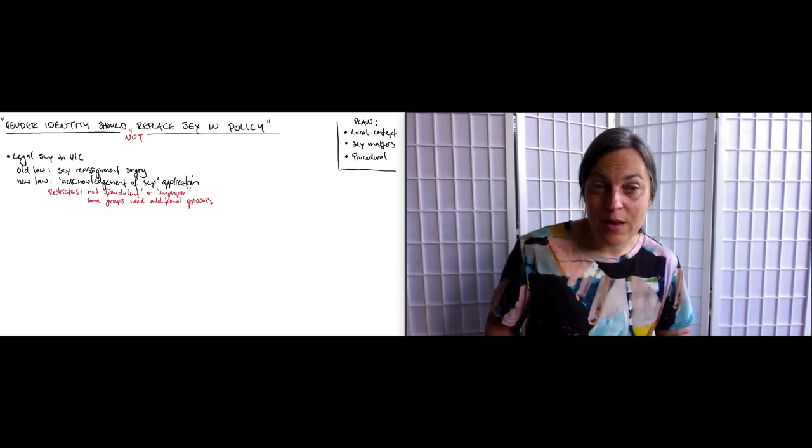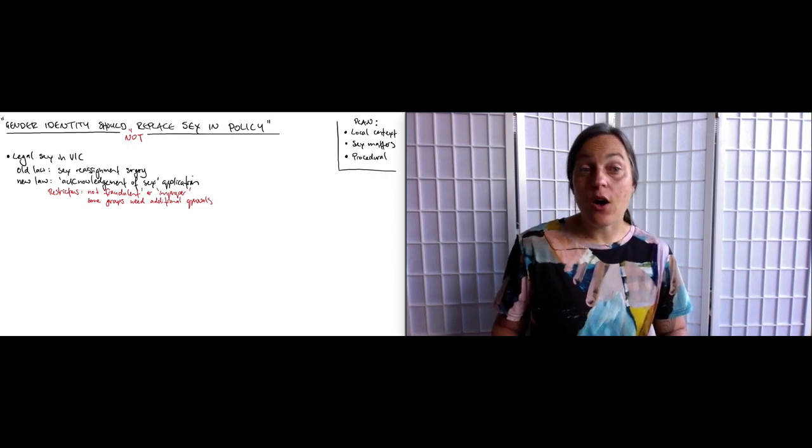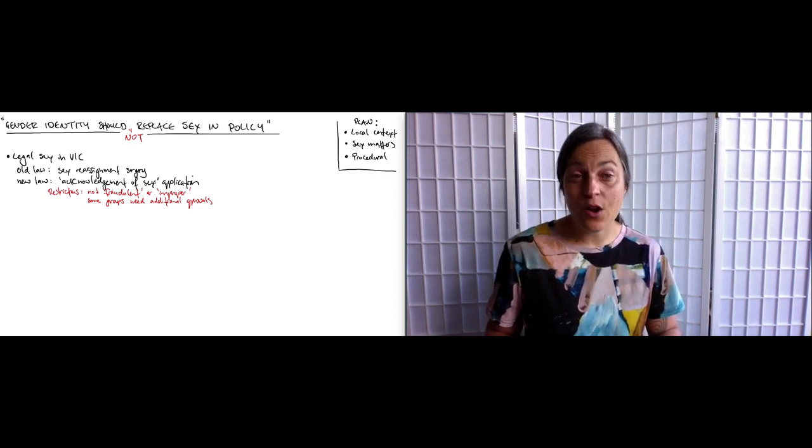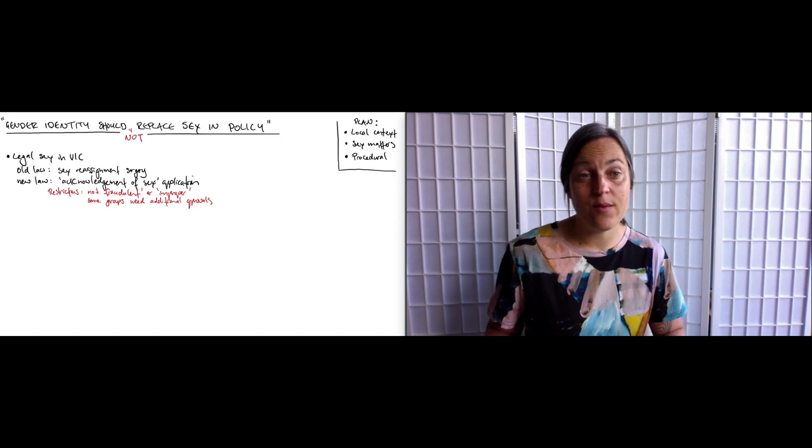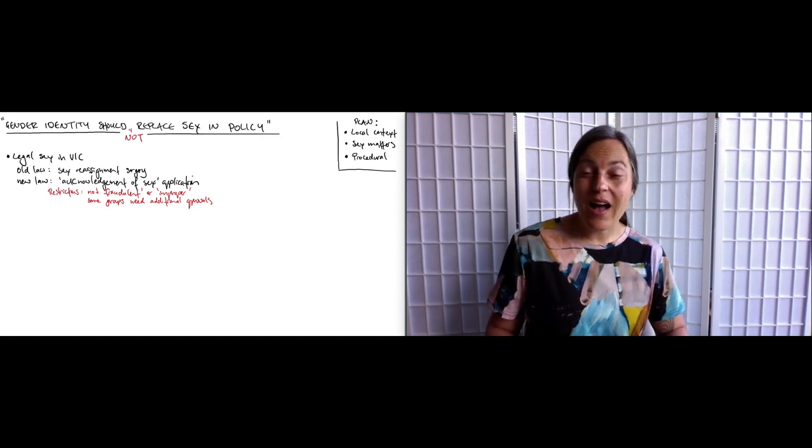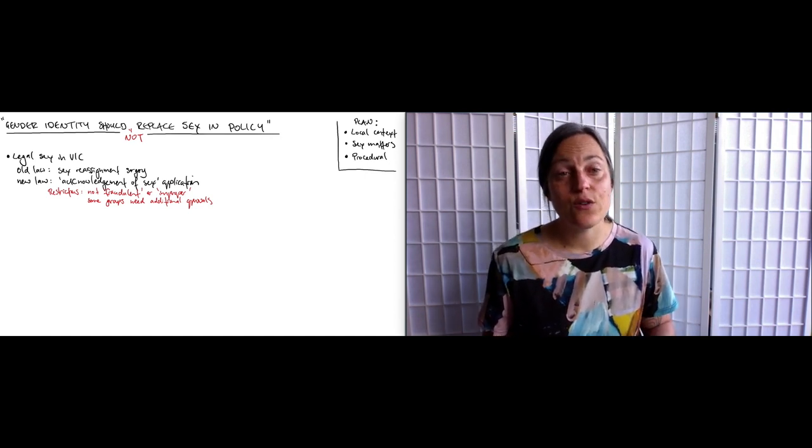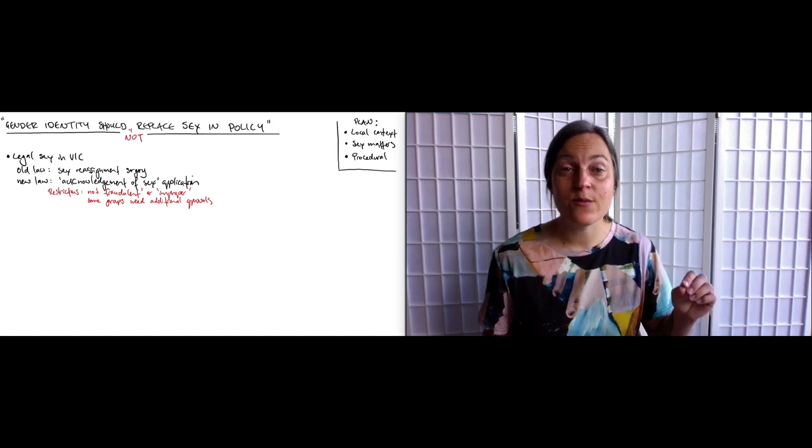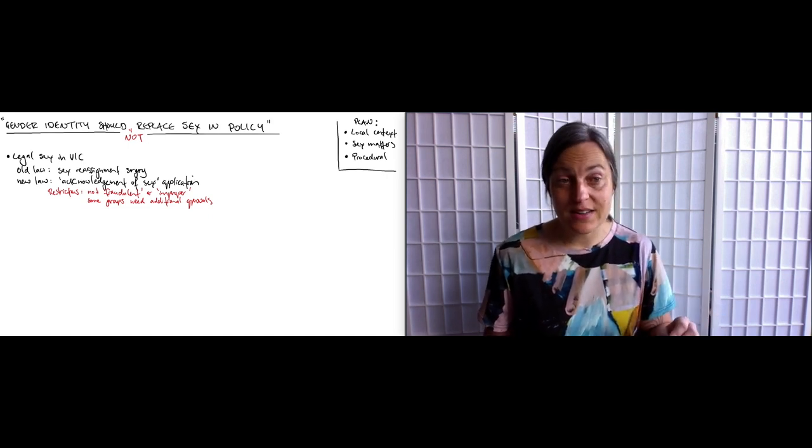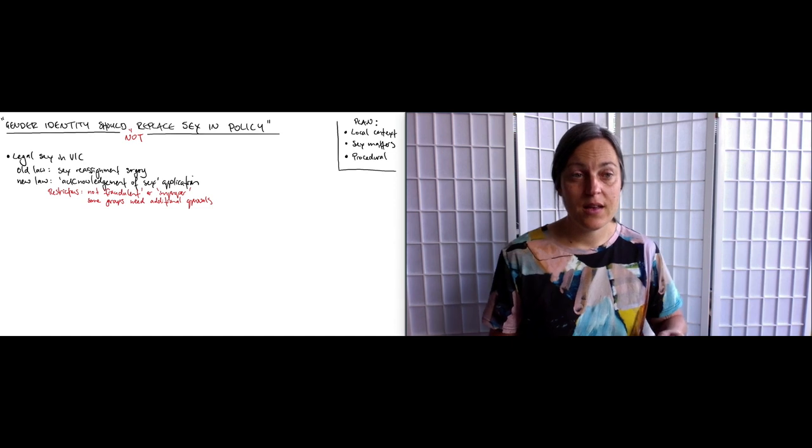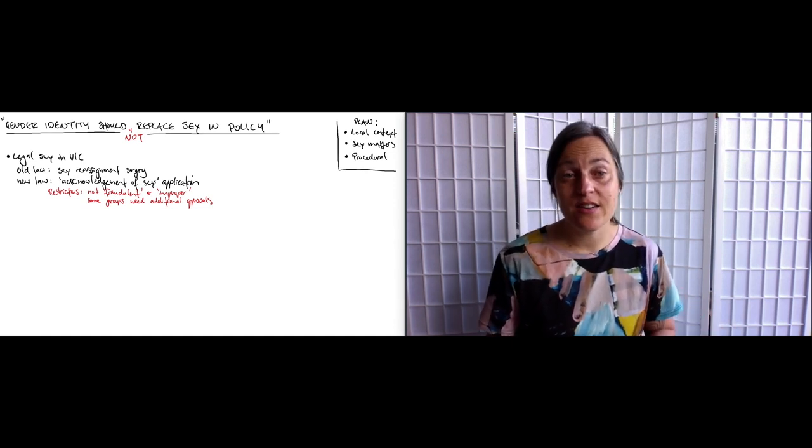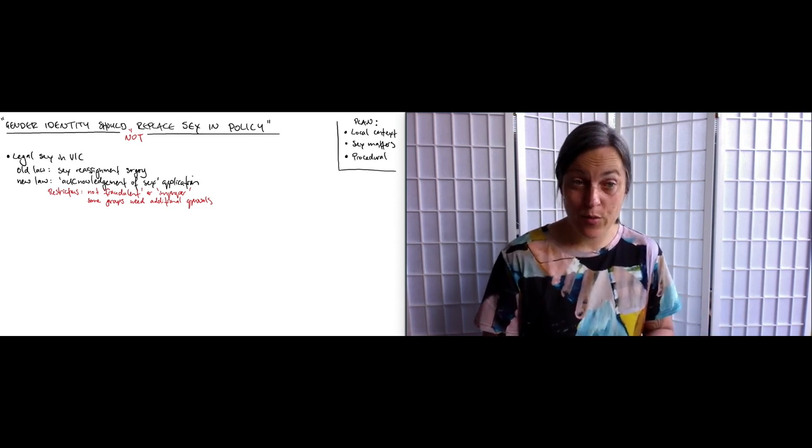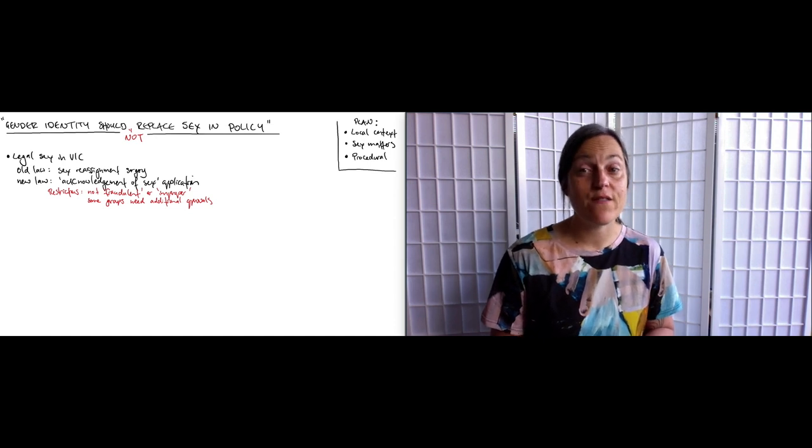The only general gatekeeping requirement in the bill is that the alteration of the record of sex is not sought for a fraudulent or other improper purpose. There are some specific restrictions too for detainees, prisoners, prisoners on parole, offenders and registrable offenders. They are allowed to make applications but there is an extra layer of approval required from specified officials.